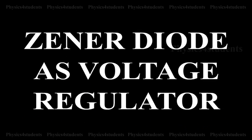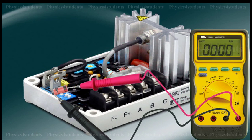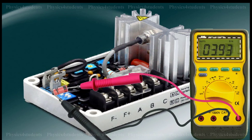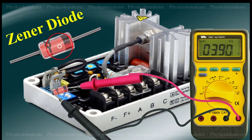Zener Diode as Voltage Regulator. To maintain a constant voltage across the load, even if the input voltage or load current varies, voltage regulation is to be made. A Zener diode working in the breakdown region can act as voltage regulator.